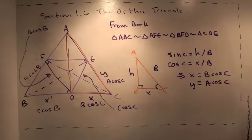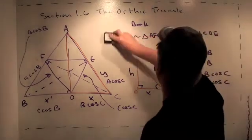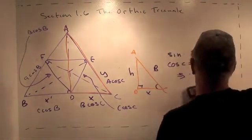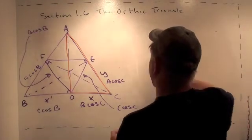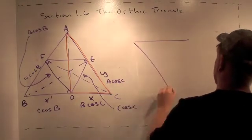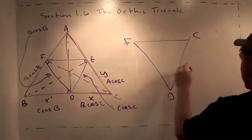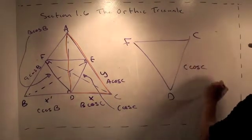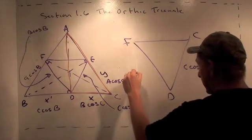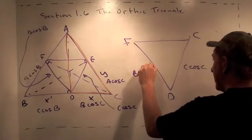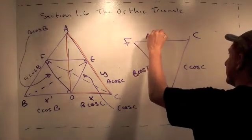So we've just learned what the sides of the orthic triangle are. The orthic triangle DFE has sides C cosine C, B cosine B, and A cosine A.